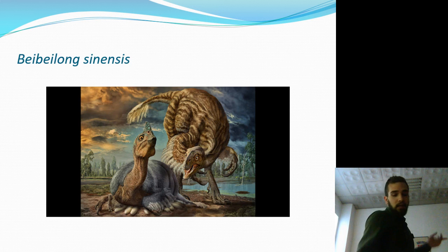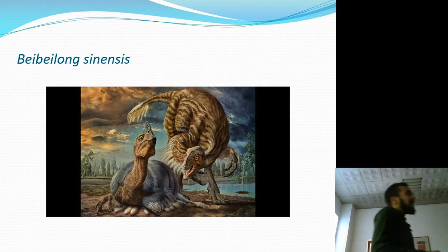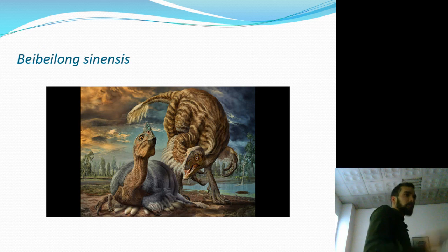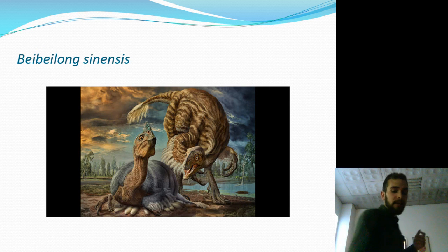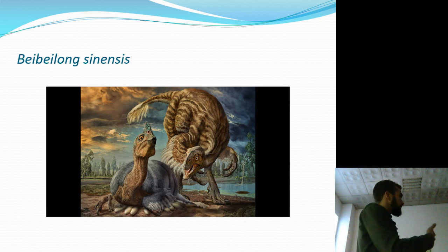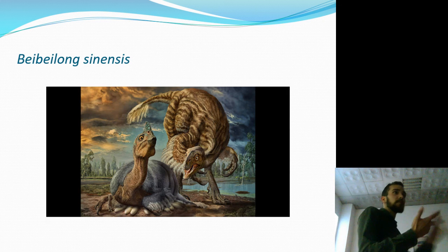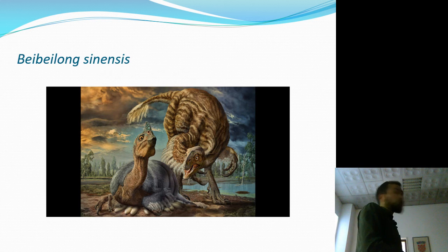Frane je planirao pogledati sve ptice na svijetu za rekonstrukciju ancestralnih stanja, ali kad je došao do otprilike 2000 vrsta od ukupno 9500, odlučio se ograničiti samo na porodicu zlatovrana. Primijećeno je da paleognati poput nojeva i emua imaju više zemljanih boja, dok kod ptica pjevica ima jako puno žarkih boja.